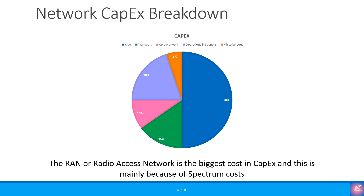If we look at the network CapEx part, we can see that the RAN is typically 50% of the total CapEx. One of the reasons for this being high is due to spectrum costs, but spectrum can also be part of OpEx as we just discussed. The transport network is 15%, core network is 10%, operations and support is 20%, and other miscellaneous costs are 5%.